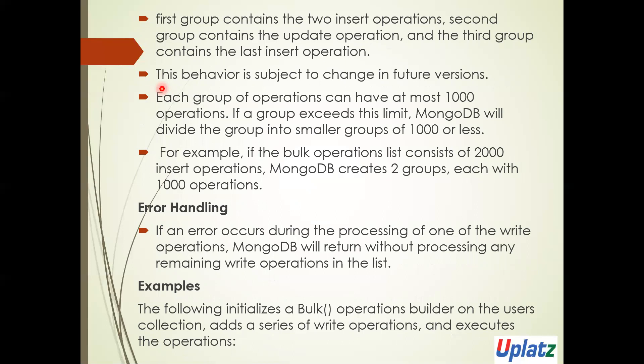Each group has at most 1000 operations. If a bulk operation contains 2000 insert operations, MongoDB will create two groups of 1000 each. If there are 2500 operations, it divides into three groups: 1000, 1000, and 500. So the maximum per group is 1000.